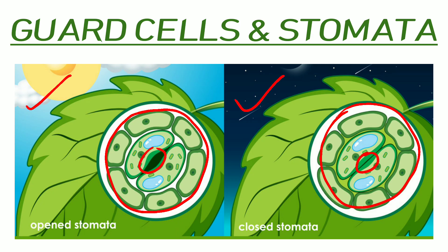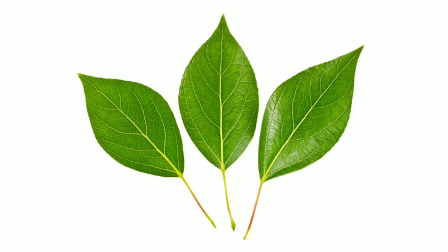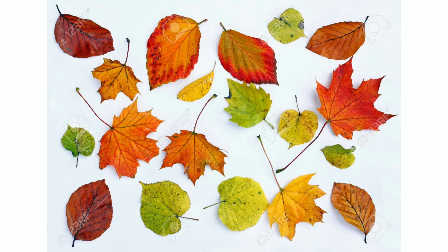Most leaves are green in color, which means they can prepare their own food. But what about leaves that are not green in color? Do you think they can prepare their own food? Yes, of course they can — they still have chlorophyll in them. It is just that they have a lesser amount of chlorophyll pigment compared to the other color pigments present in that leaf.